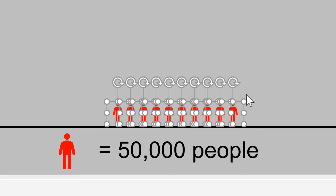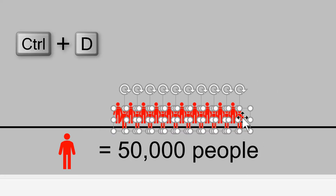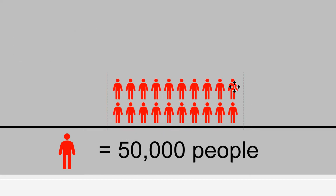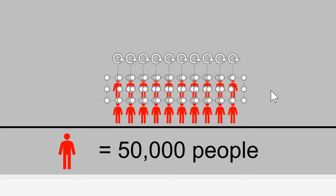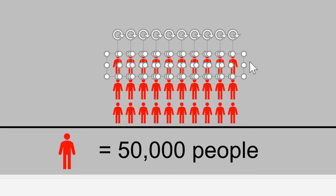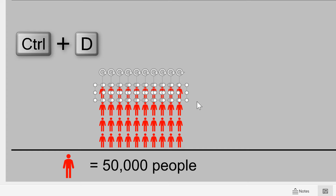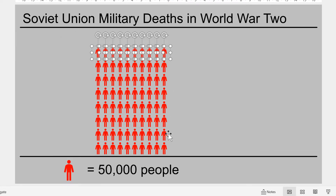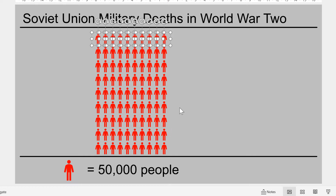Now I'm going to click and drag to select this whole row and then press Ctrl D to duplicate it, and then drag this row above it and use the guidelines to line it up. Then so long as you keep all of these icons selected, you can press Ctrl D again and it will make another copy and move them the same amount upwards. So this is 2 million people, 3 million.